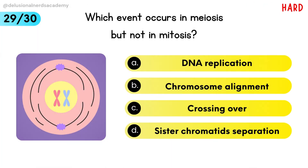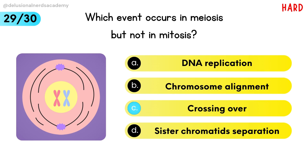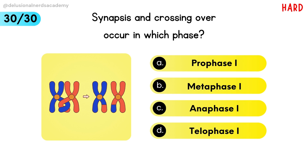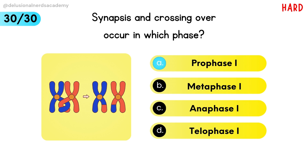Which event occurs in meiosis but not in mitosis? Crossing over takes place in meiosis but not in mitosis. Synapsis and crossing over occur in which phase? Prophase 1 is the correct option.